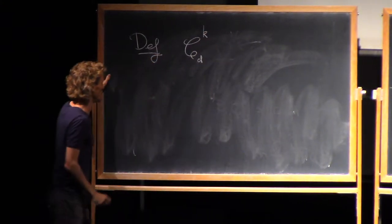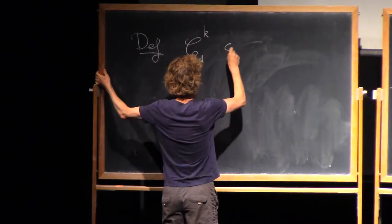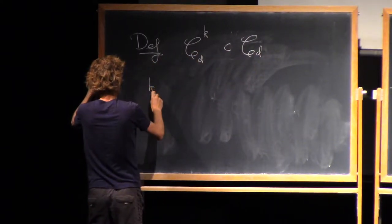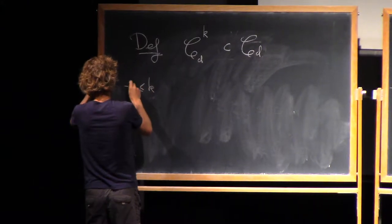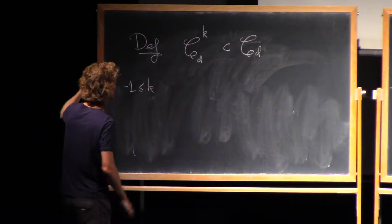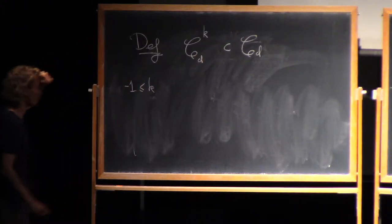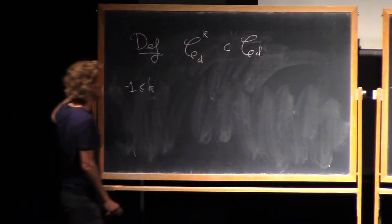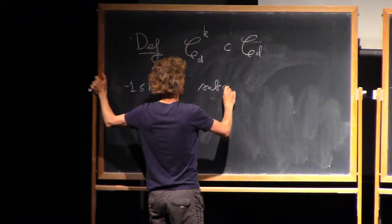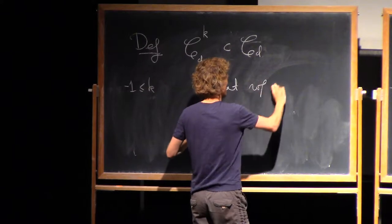Not exactly if you take the full cobordism category, but there are some subcategories with some remarkable properties. That, in the notes, I call cdk. And k here is a number. It's at least negative one. And, okay, it can be anything, but it's not interesting if it's bigger than d.